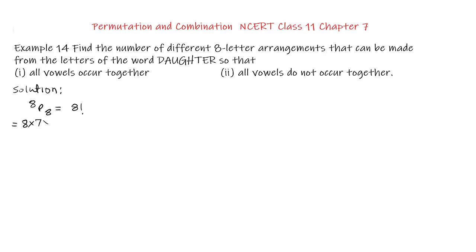This is equal to 8×7×6×5×4×3×2×1. This is equal to 40,320. This is our answer for the question asked, and now we go to part 1 of the question.